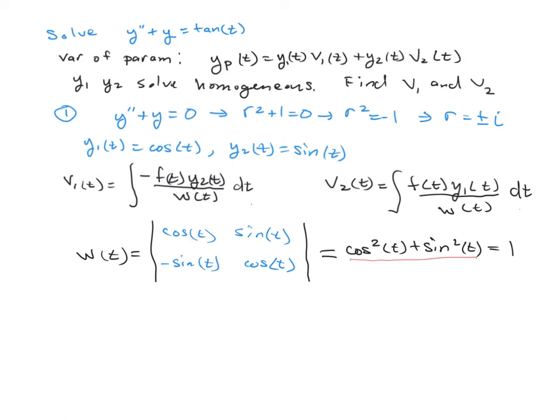Now v1 equals the integral of negative tan(t) times y2, which is sin(t), divided by the Wronskian, which is 1.